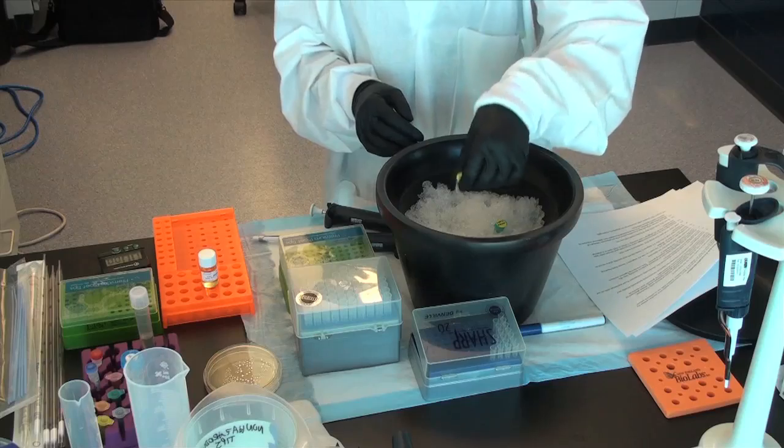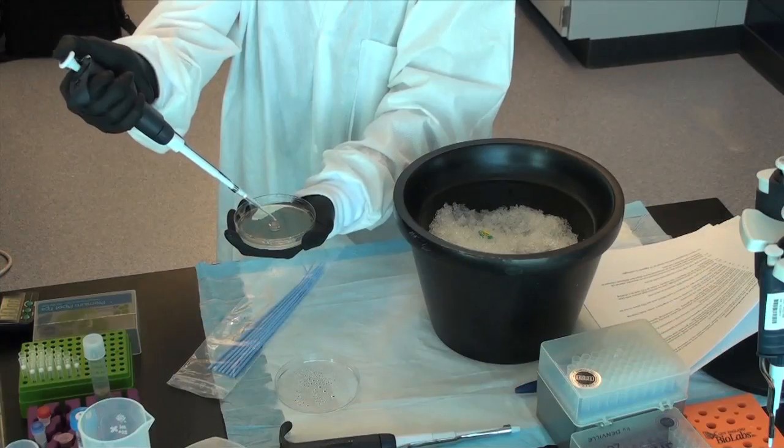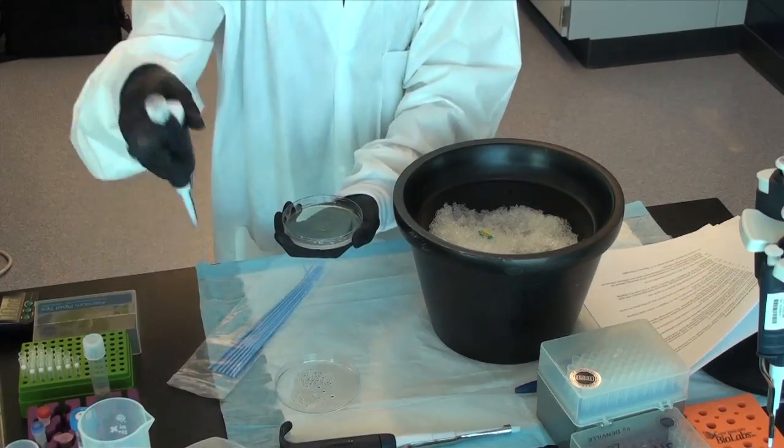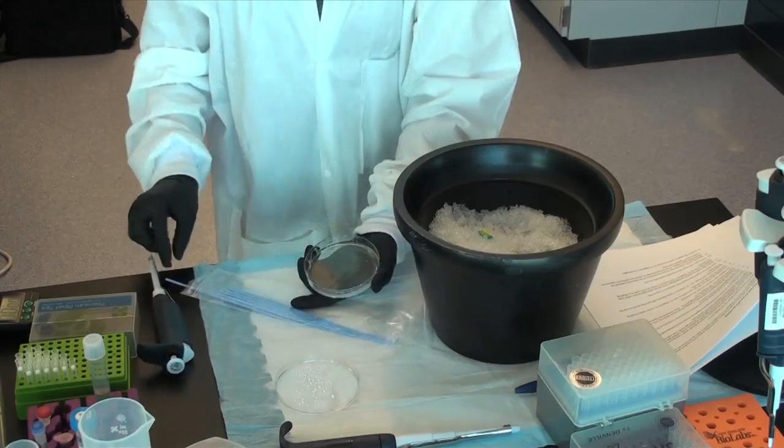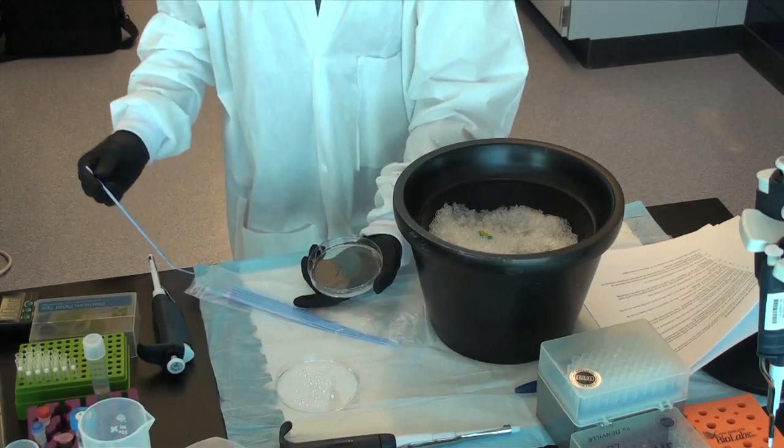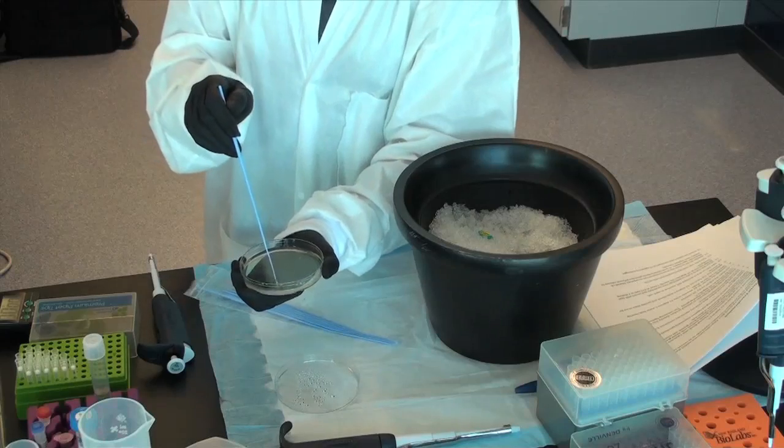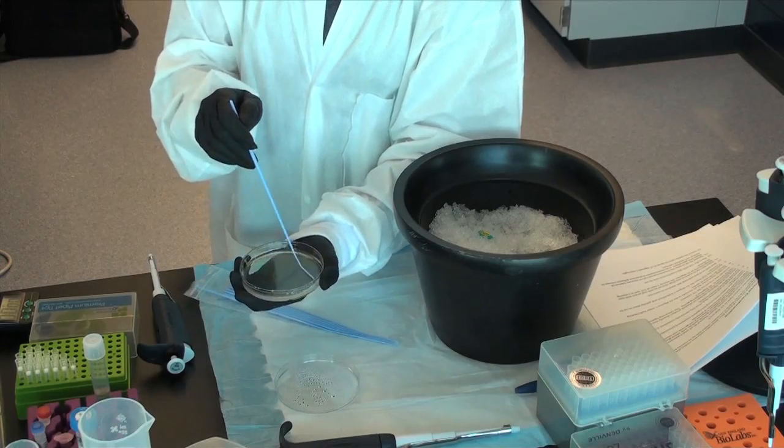Step 12: Place the vial with the transformed cells on ice. Step 13: Spread 10 to 50 microliters from the transformation vial on separate labeled LB ampicillin agar plates. It's recommended to plate two different volumes to ensure well-spaced colonies.